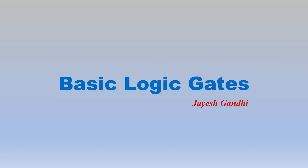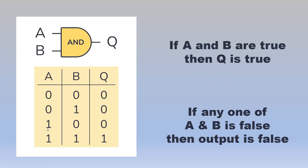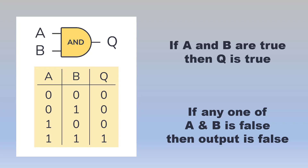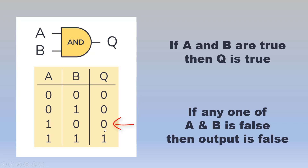Let us look at the truth table of an AND gate. The AND gate has two inputs and one output. With two inputs there are four possible combinations, so the input to the AND gate can be 0,0 or 0,1 or 1,0 or 1,1. For each input there is a definite output: for 0,0 the output is 0, for 0,1 the output is 0, for 1,0 the output is 0, and for 1,1 the output is 1.